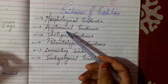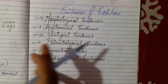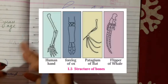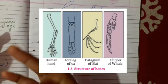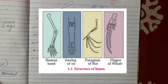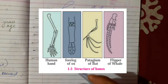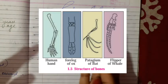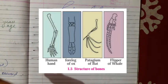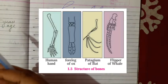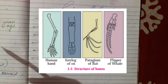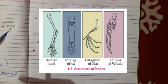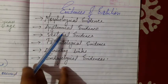Anatomical evidence is nothing but internal similarities. The human hand, the cat's foreleg, the patagium of a bat, and the flippers of a whale all have the same bone structure. If we look carefully, they have almost the same joints and bone structure, but the use of these organs is different. These similarities again suggest common ancestors before diverging into different organisms.